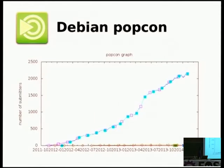Recently MATE was included in Debian 2. This is interesting — here is the graph of Popcon, the stats from Debian.